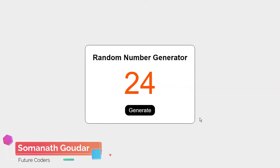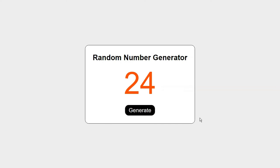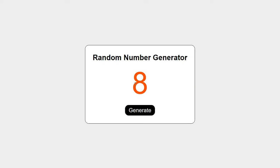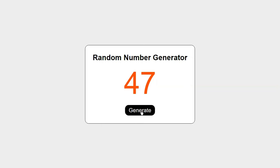What is up everyone, this is Somnath Goudar from Future Coders. In this video tutorial we are going to be building a random number generator using HTML, CSS and JavaScript. This is going to be a very beginner friendly JavaScript project. As you can see, if I click on this generate button it's going to generate a new random number between 1 to 100 every time I click on it.